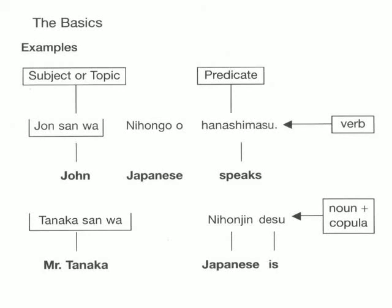Next, we have Tanaka-san wa Nihonjin desu — Mr. Tanaka, Japanese, is. In other words, Mr. Tanaka is Japanese. Our subject or topic is Tanaka-san wa, and our predicate is Nihonjin desu. Here we have an example of a noun plus a copula, the noun being Nihonjin and the copula being desu.